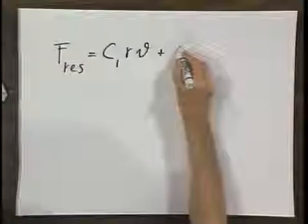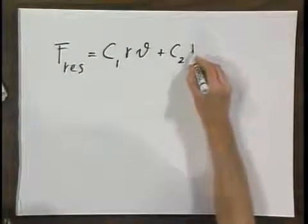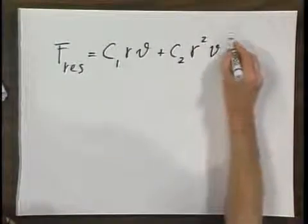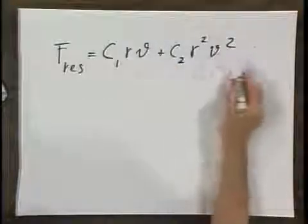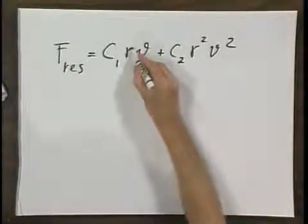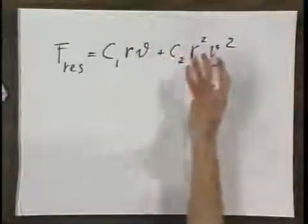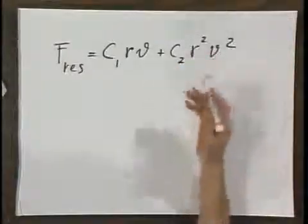C₁RV plus C₂R²V². V is the speed of the object and R is the radius of the sphere.